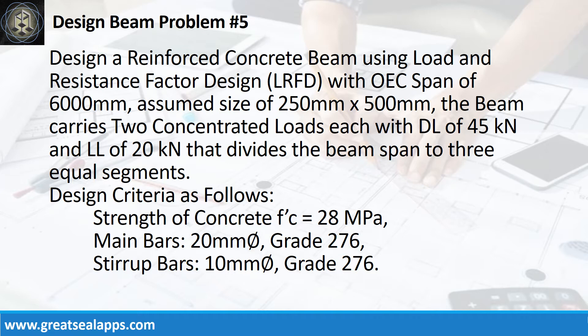Design criteria are as follows: strength of concrete is 28 MPa; main bars are 20 mm bar, grade 276; stirrup bars are 10 mm bar, grade 276.